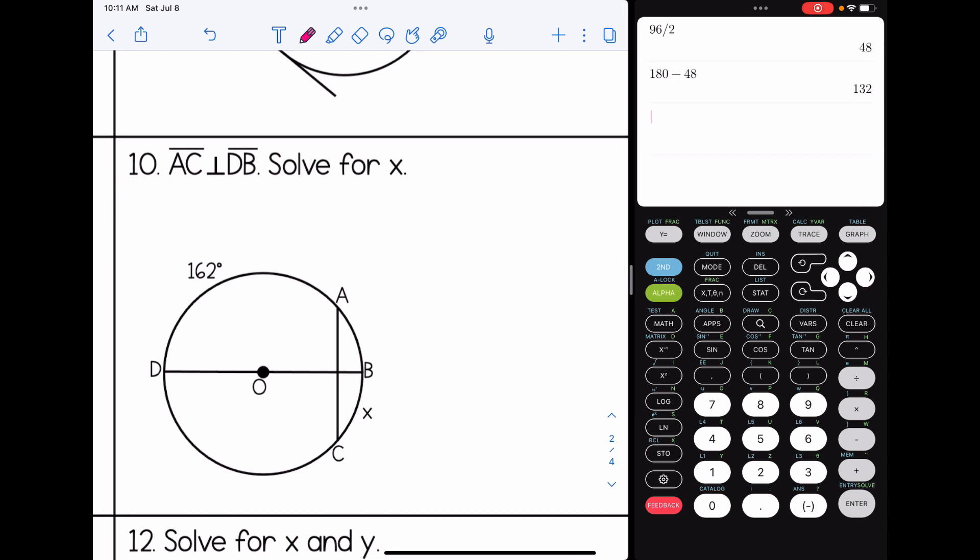Number 10, AC and DB are perpendicular. That means we have right angles in here. So I'm going to go ahead and draw them in the picture. Solve for x. This reminds me of the other question before where we're looking for an arc instead. So I'm going to start out with my rule, add the arcs, divide by two, but I'm going to set it equal to the measure of the angle. So I'm going to set it equal to 90. I'm going to put that over one so I can cross multiply. So 162 plus x is equal to 180. Subtract 162 on both sides, and I get that x is 18 degrees.